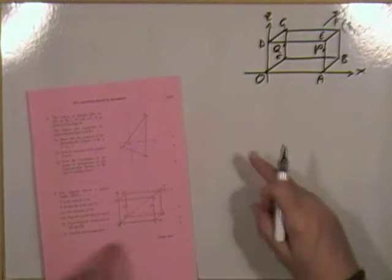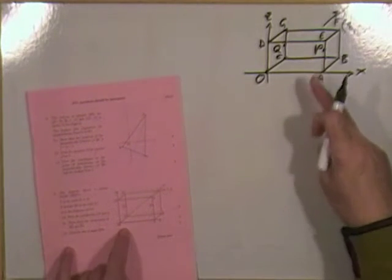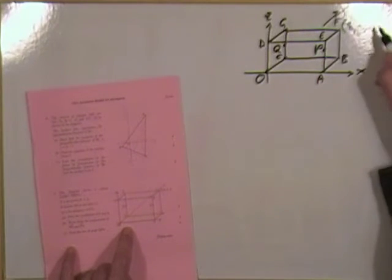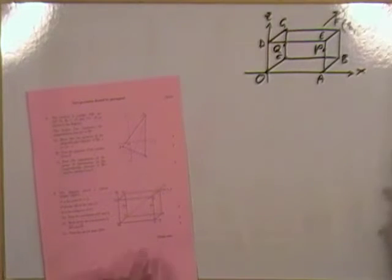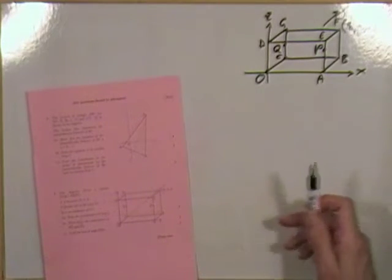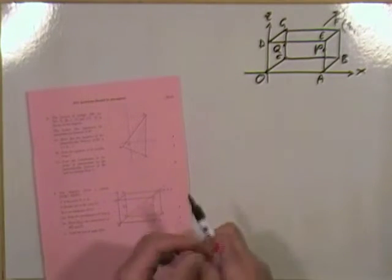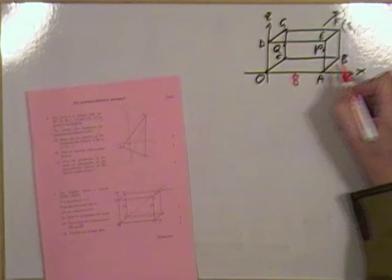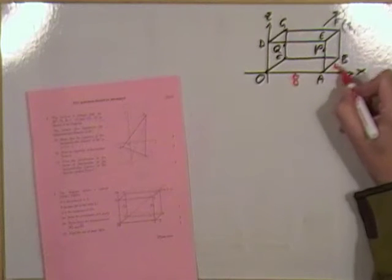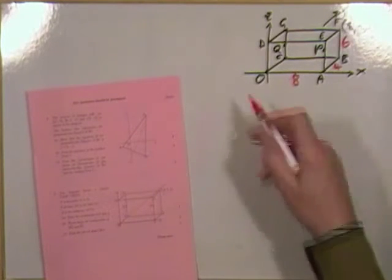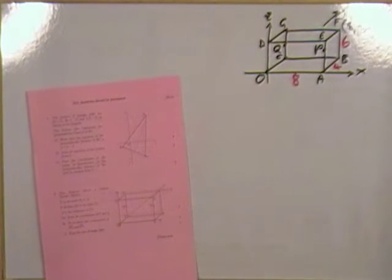There's a cuboid. It gives you the far-away point at 8, 4, 6 — handy, because that gives you the length, breadth and height. Length 8, breadth 4, height 6. That'll take you to any point on it.